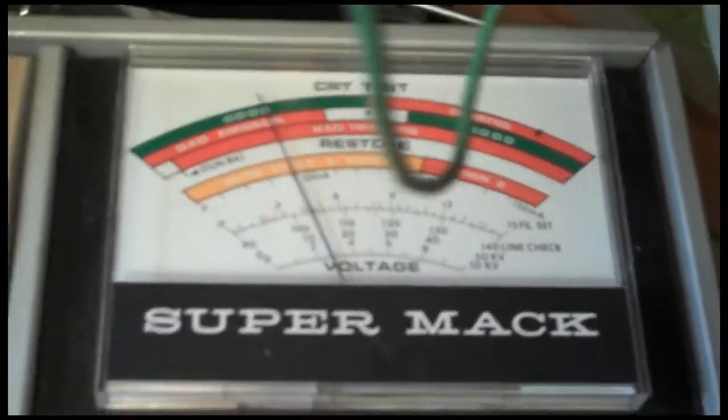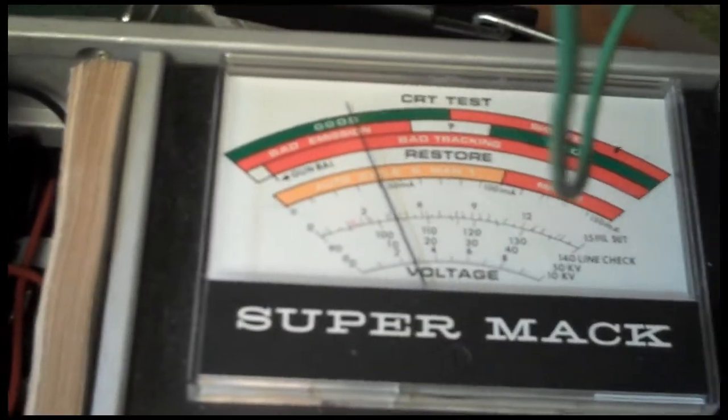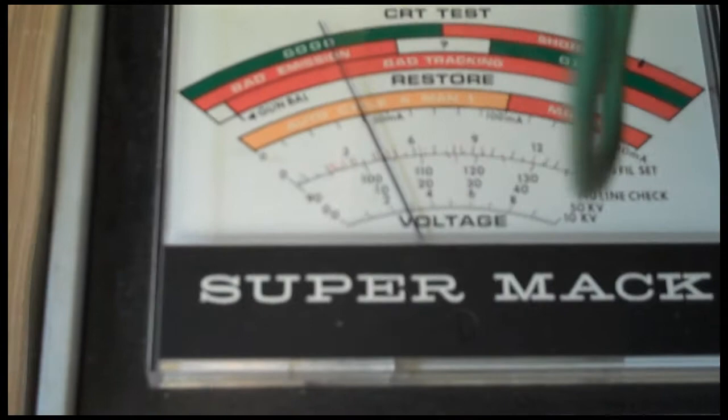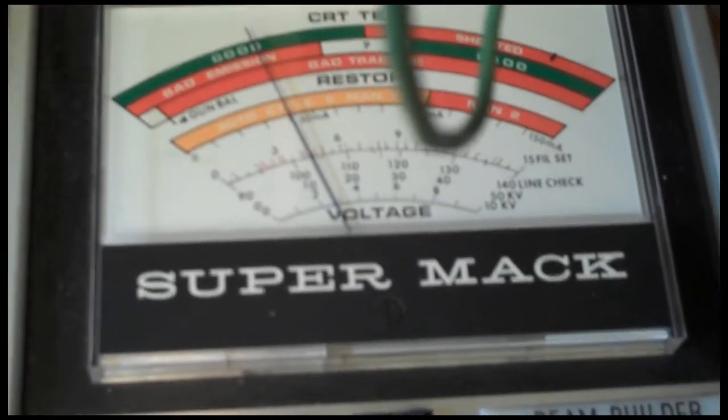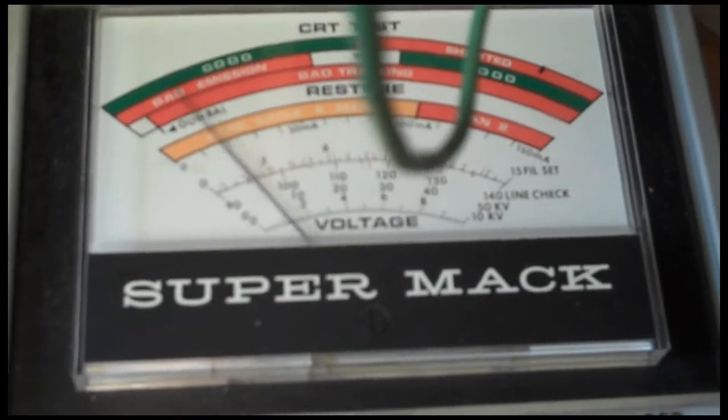So here I'm checking the red gun on the 15GP22 CRT in the RCA CT-100. I'm using a filament voltage of 4 volts, which gives me a good idea of the life and overall condition rather than using 6 volts. We'll go up here to cutoff.